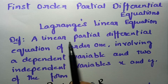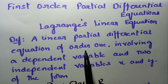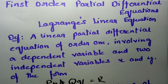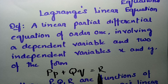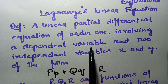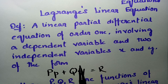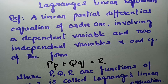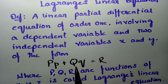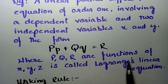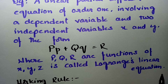Here is the definition. A linear partial differential equation of order 1 involving one dependent variable and two independent variables x, y is of the form P·p + Q·q = R. Any equation of this form is a Lagrange's linear differential equation, where P, Q, and R are functions of x, y, z.